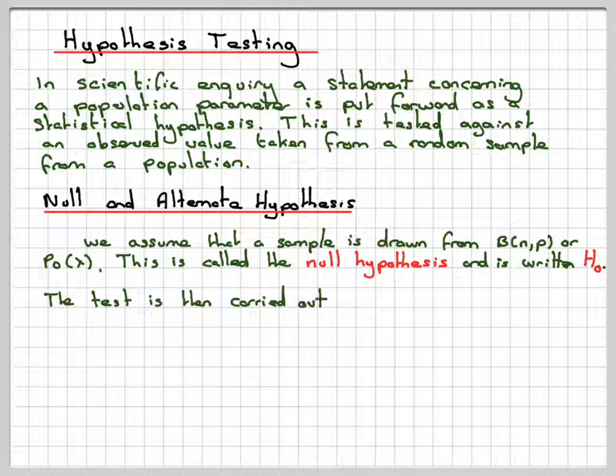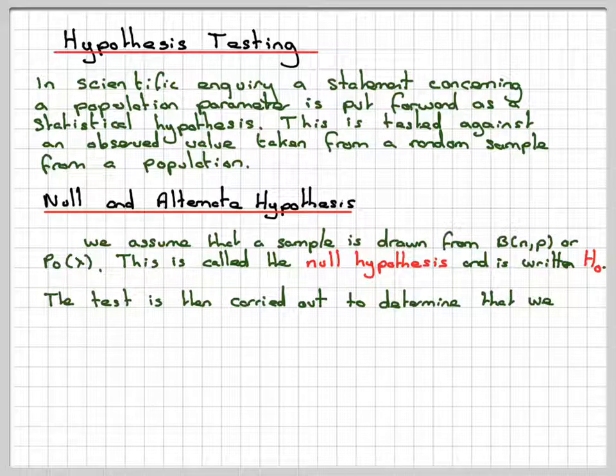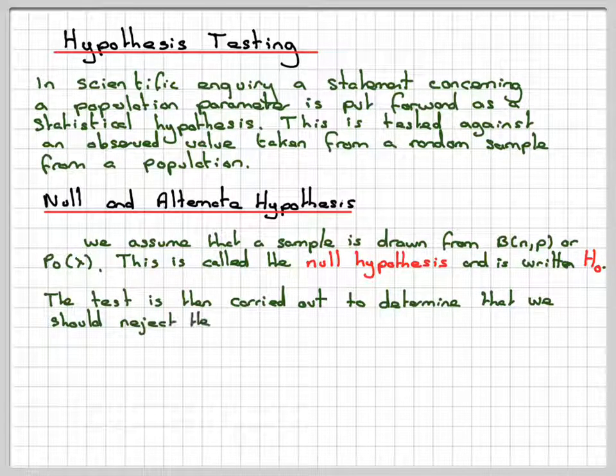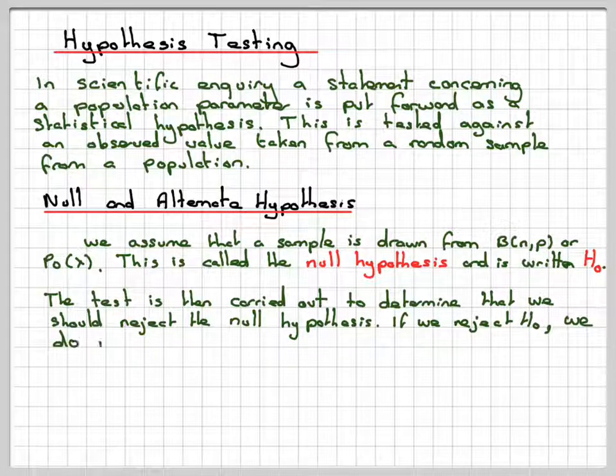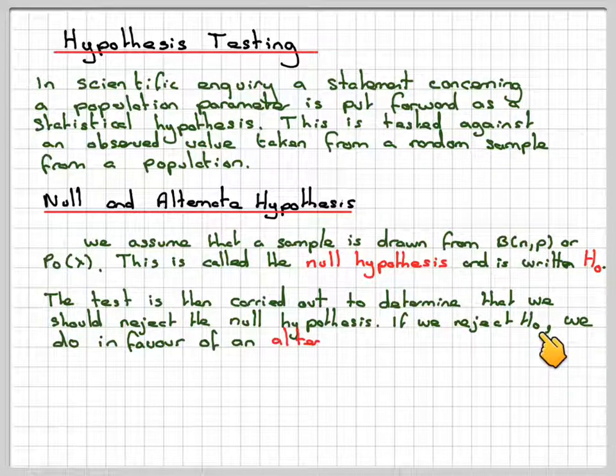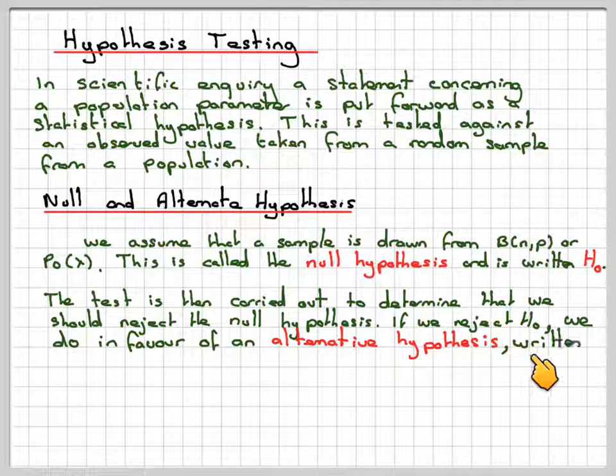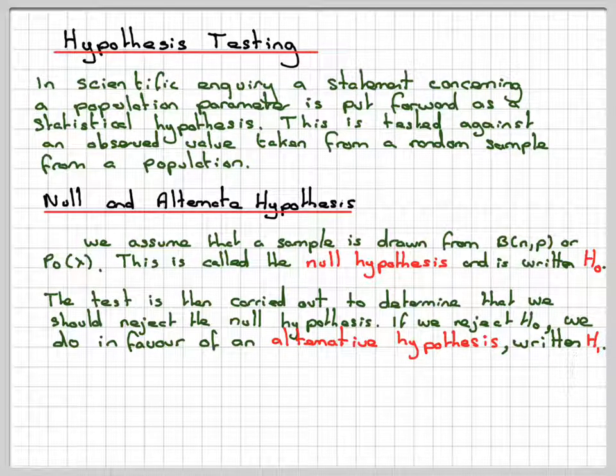The test is then carried out to determine that we should reject the null hypothesis. If we reject the null hypothesis, which is H0, we do that in favor of an alternative hypothesis written H1.